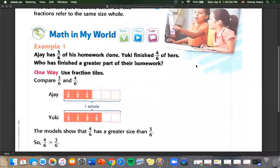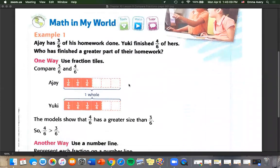AJ has three sixths of his homework done. Yuki finishes four sixths of hers. Who has finished a greater part of their homework? One way we can see is we can use fraction tiles.